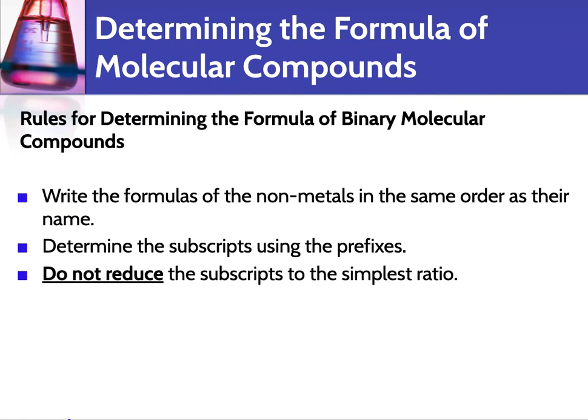You do not reduce the subscripts to the simplest ratio like you do with ionic compounds. Here's an example: boron trifluoride. Boron is B, and we know there's only one of it, so we just have B. 'Trifluoride' tells us there are three fluorine atoms, so the formula is BF3.